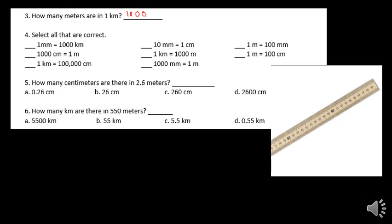It says select all that are correct. '1 millimeter is 1,000 kilometers' — well, that doesn't make sense. 1 millimeter is one of these tiny things, and 1,000 kilometers is a huge distance, like several states by car. So we would not select that. '10 millimeters is 1 centimeter' — yes, that's correct, so we check that off. '1 meter is 100 millimeters' — no, it's 100 centimeters but 1,000 millimeters, so we wouldn't check that. We would check '1 meter equals 100 centimeters.'